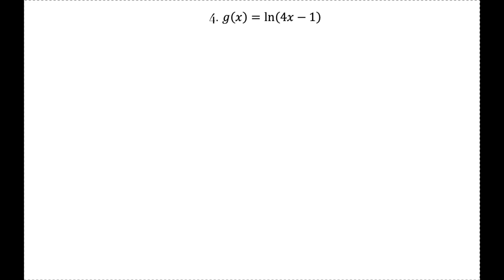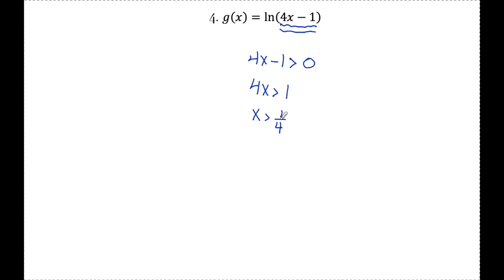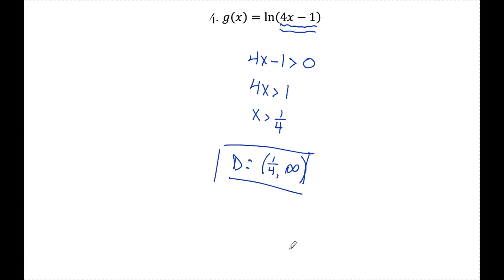Number four: ln of 4x minus 1. Since I have the natural log of a polynomial, I have to make sure that expression is always greater than zero. Setting up the inequality 4x minus 1 greater than zero, I add 1 and divide by 4 to get x is greater than one-fourth. In interval notation, the domain is parenthesis one-fourth to infinity. I'm not including one-fourth because the expression must be strictly greater than zero. That's it for finding the domain of functions — if you have any questions, feel free to leave them in the comments below. Have a great day.